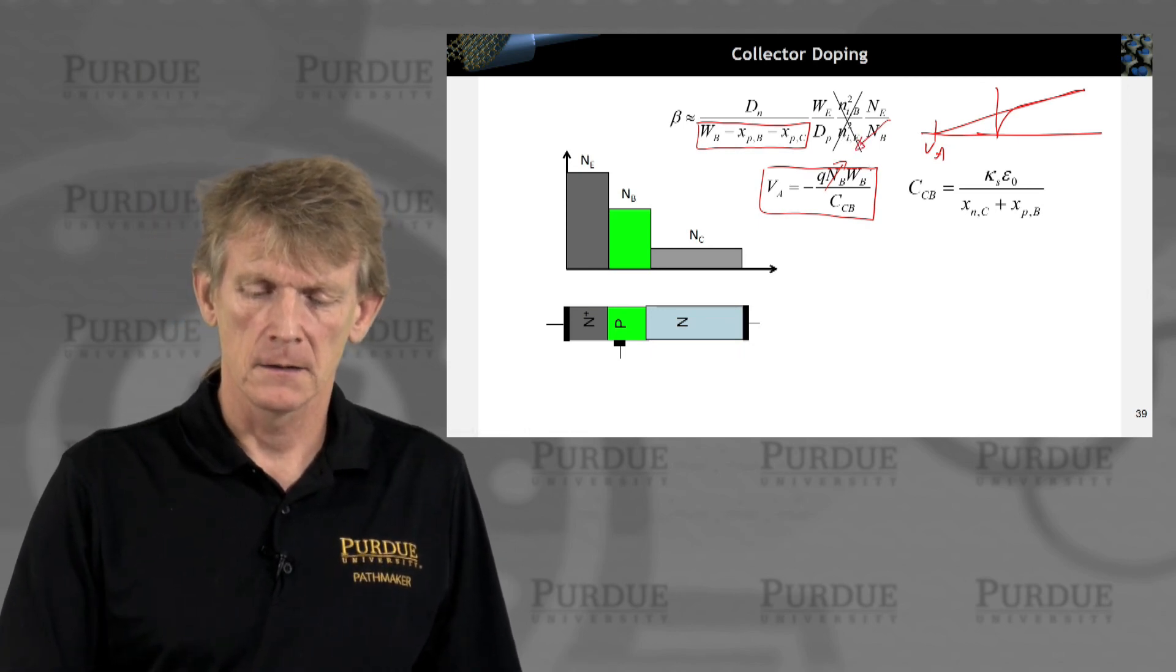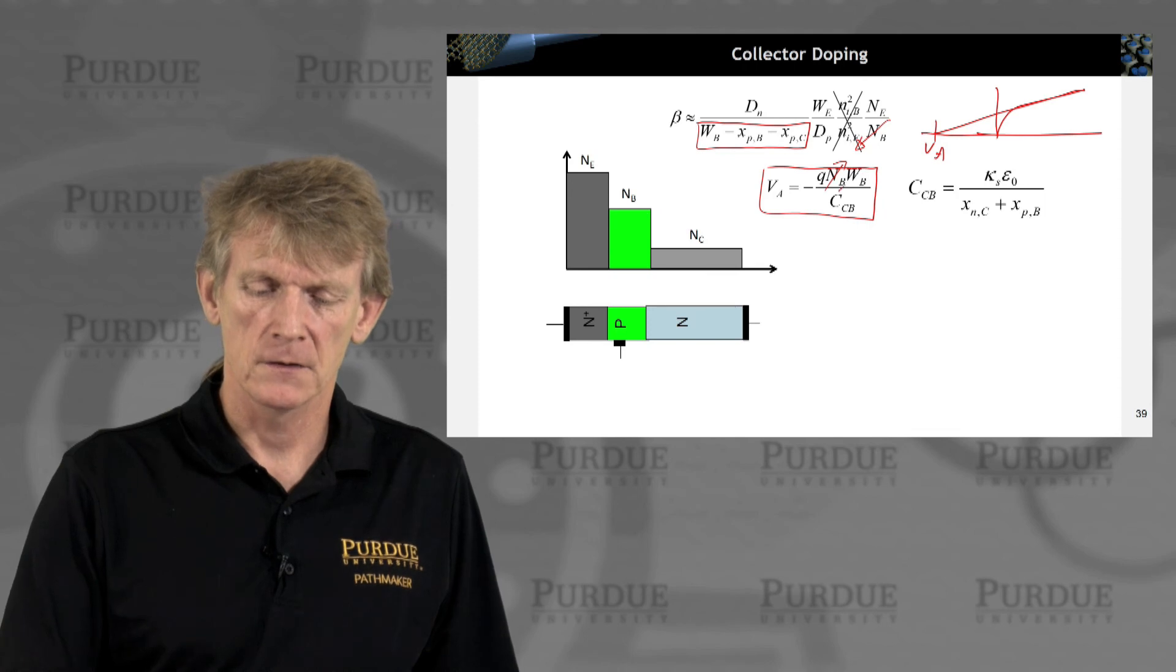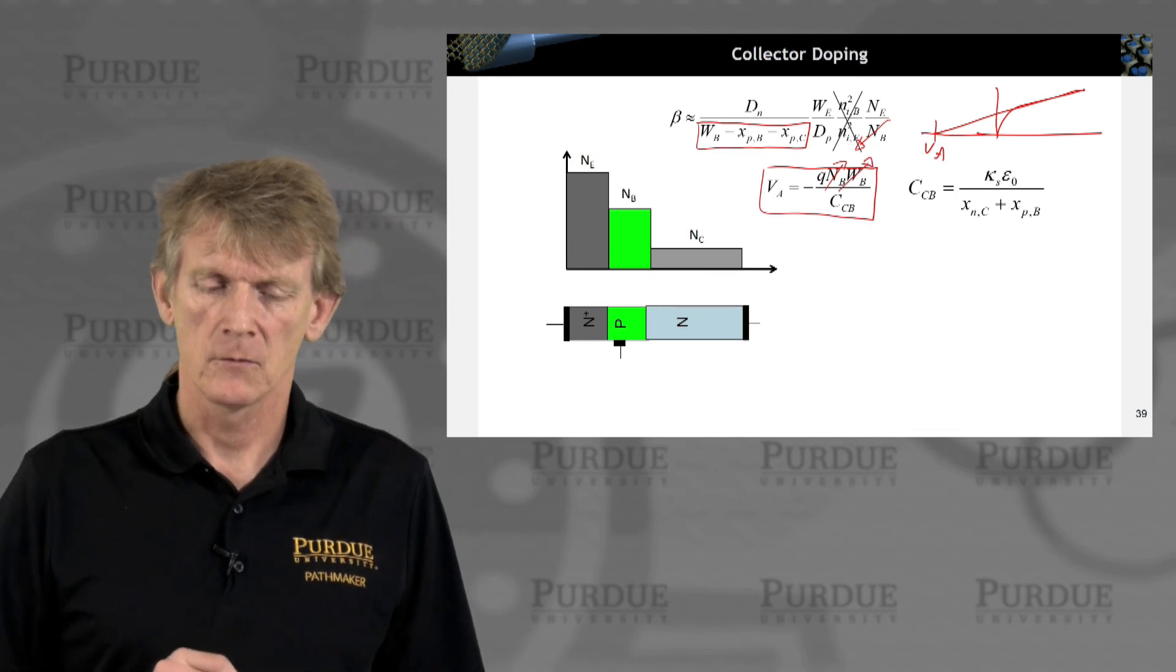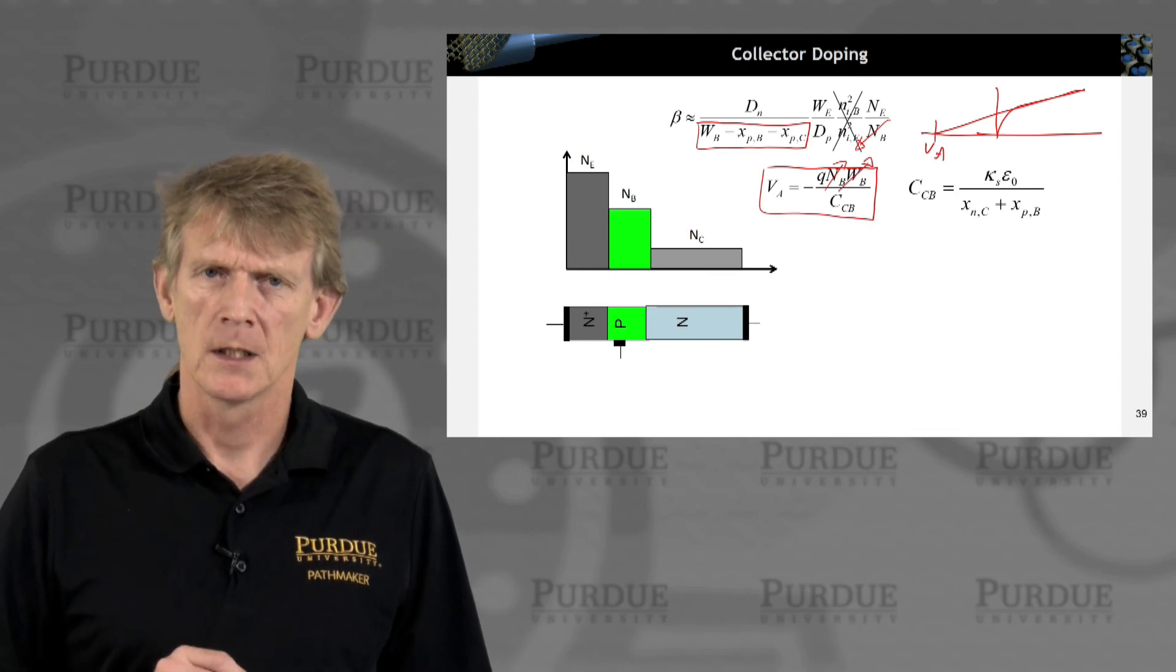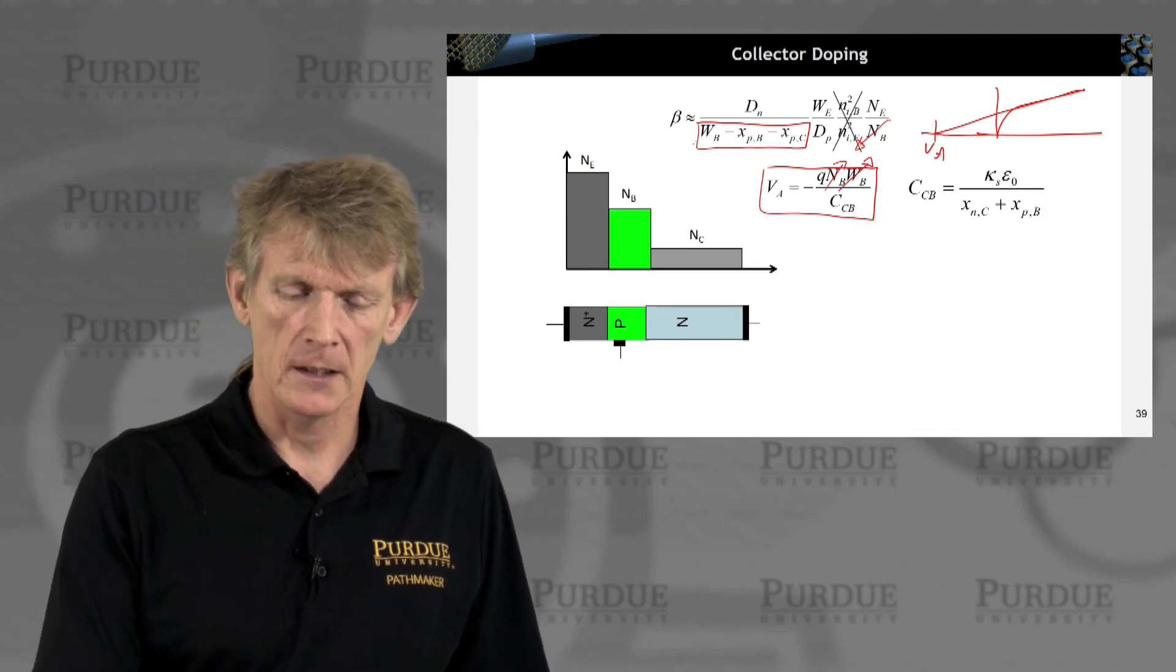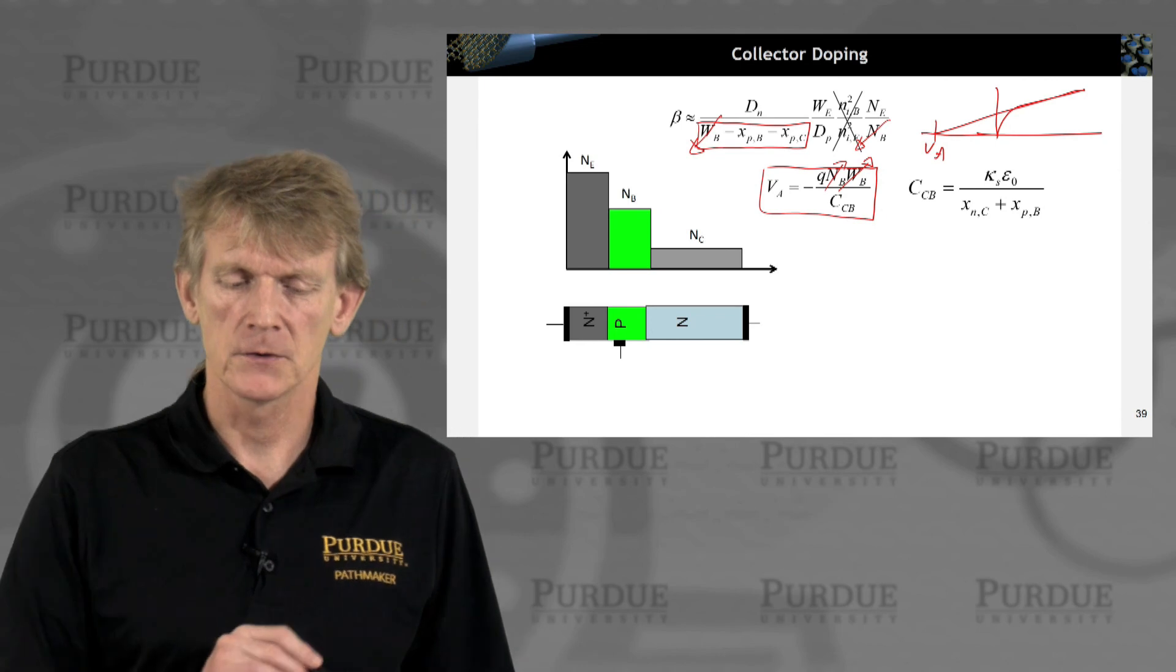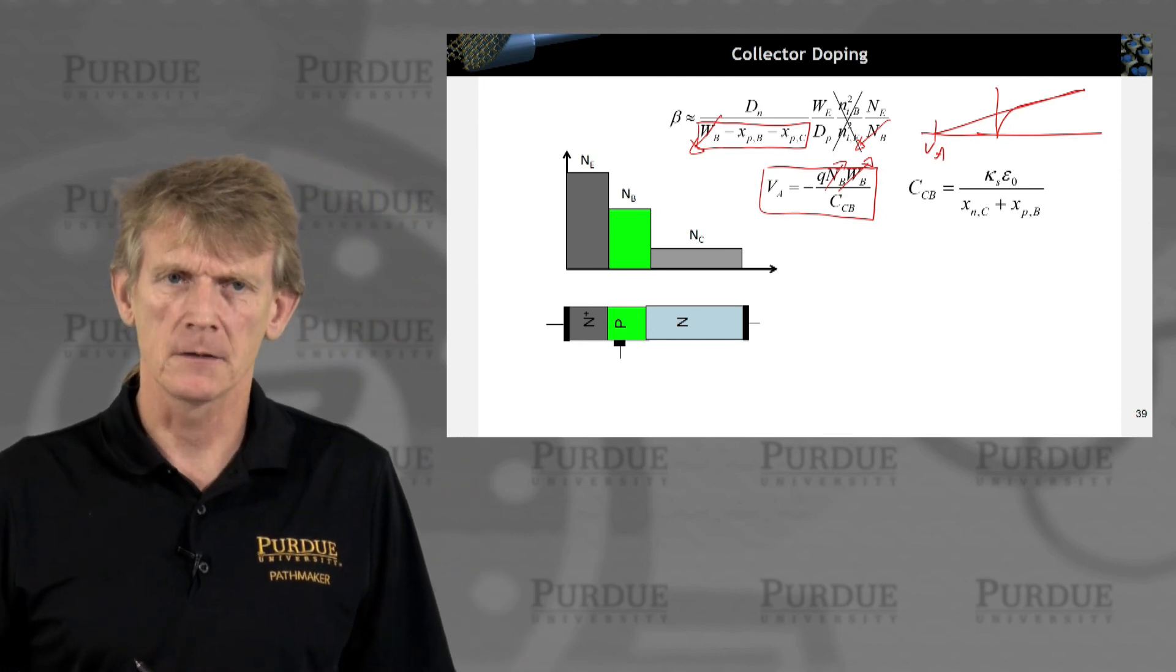If we increase WB, which would be another term to increase VA, that would mean beta again goes down. So those are counterproductive efforts.